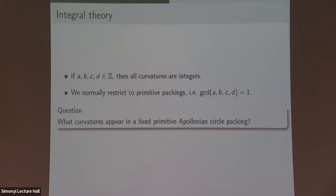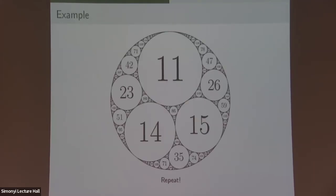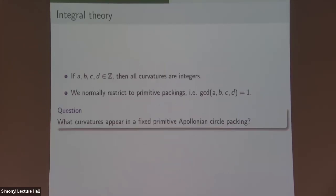The basic question at the heart of this theory is: what are these integers? If I go back to the picture, there are a lot of numbers — what are they? Can we describe them? You could do this over even a number field and get Gaussian integers, but we'll just stick to the integers, because even that's already hard.